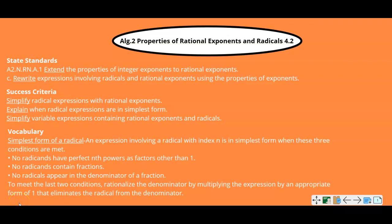Properties of rational exponents and radicals. Remember from previous classes, a rational number is any number that can be written in the form A over B. So we're going to be talking about exponents that are fractions, and radicals are square roots, cube roots, fourth roots, etc. So we're going to be talking about properties of both rational exponents and radicals.